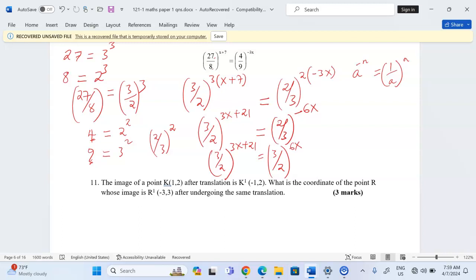Now we can wind up by saying the bases have become uniform on both right hand side and the left hand side. That means now we can equate the indices.